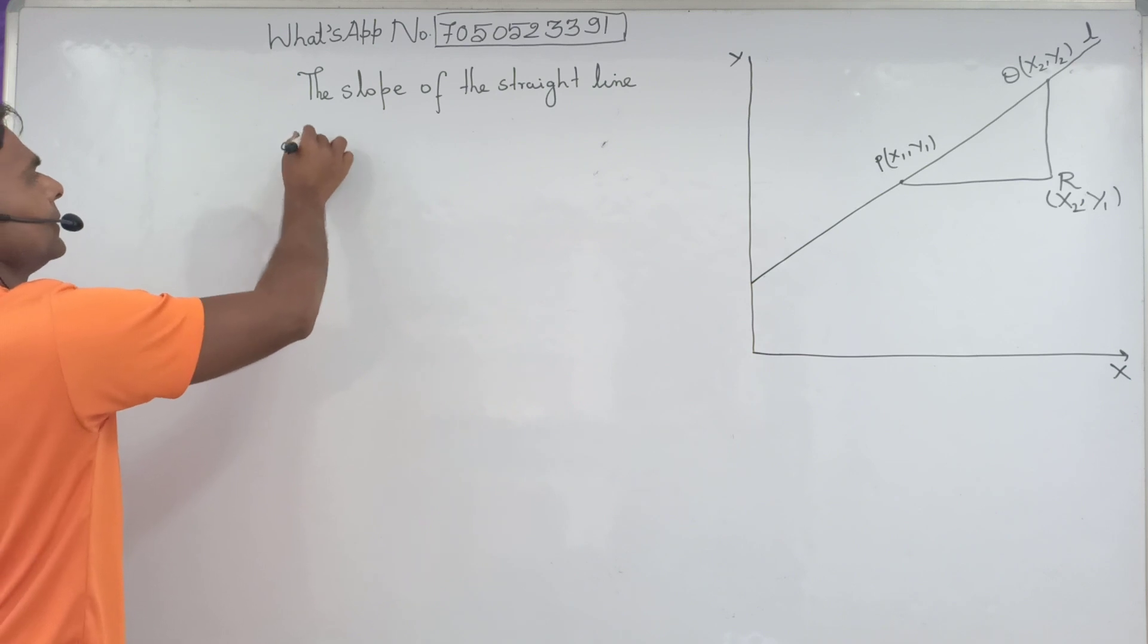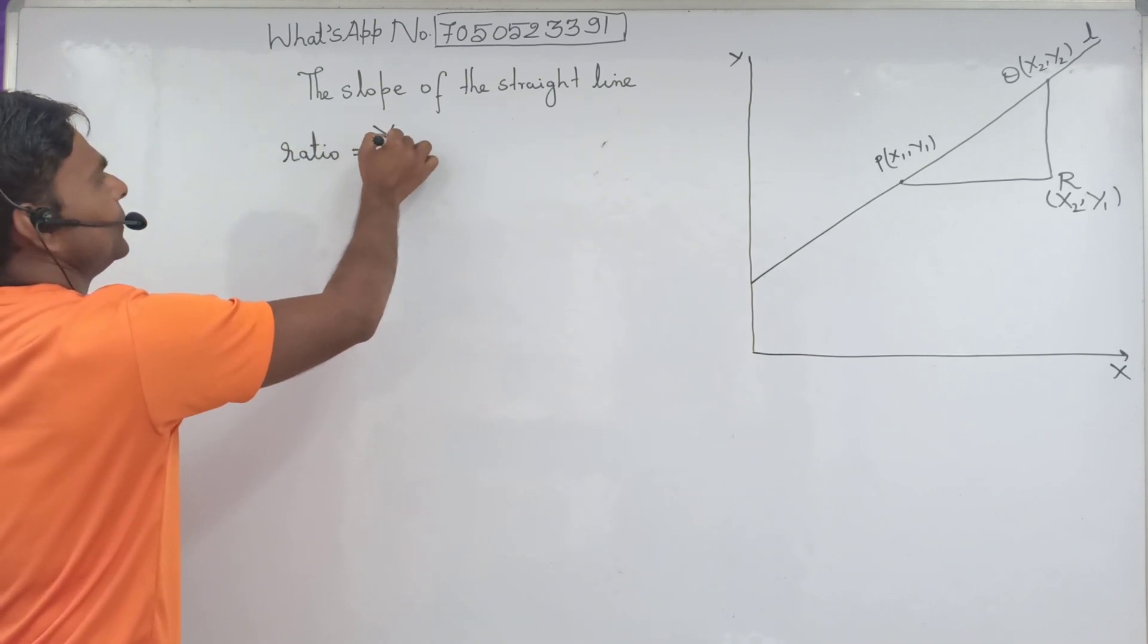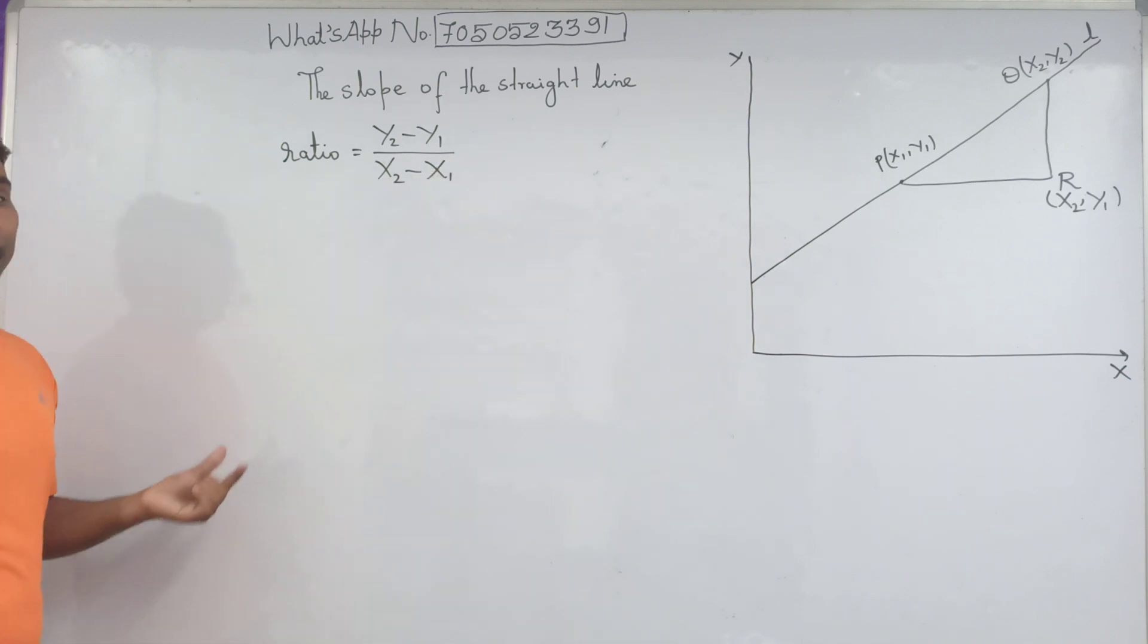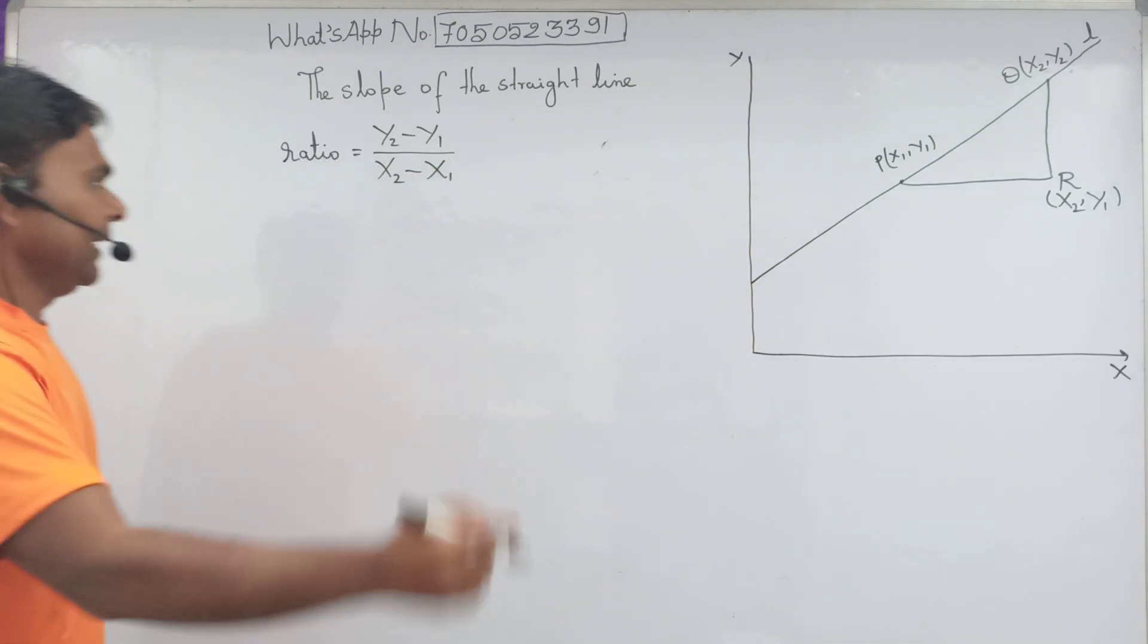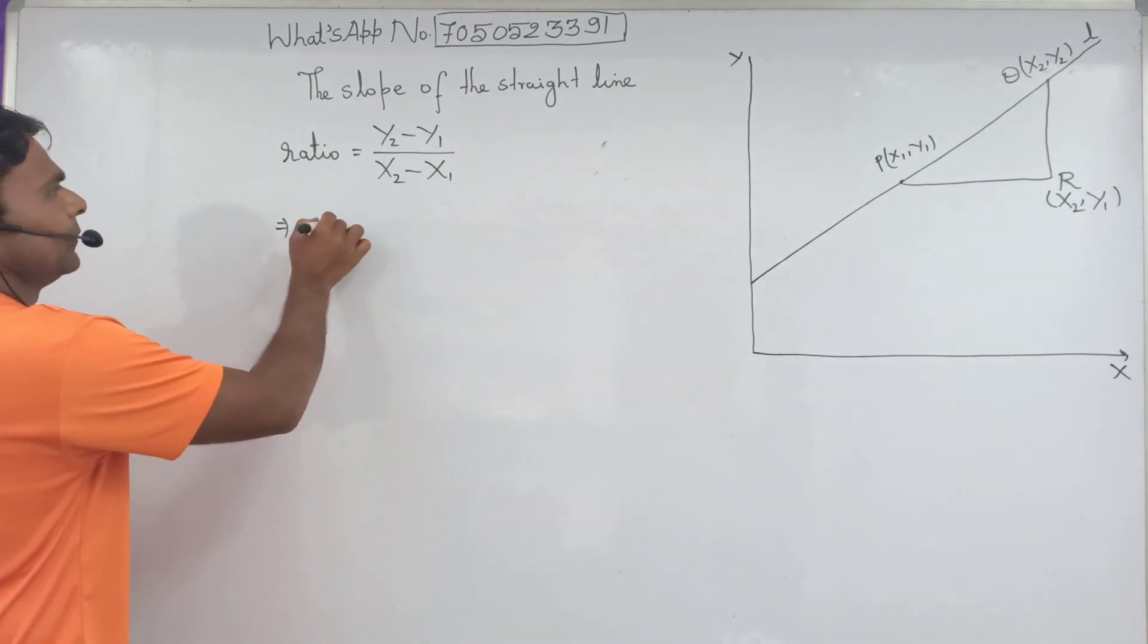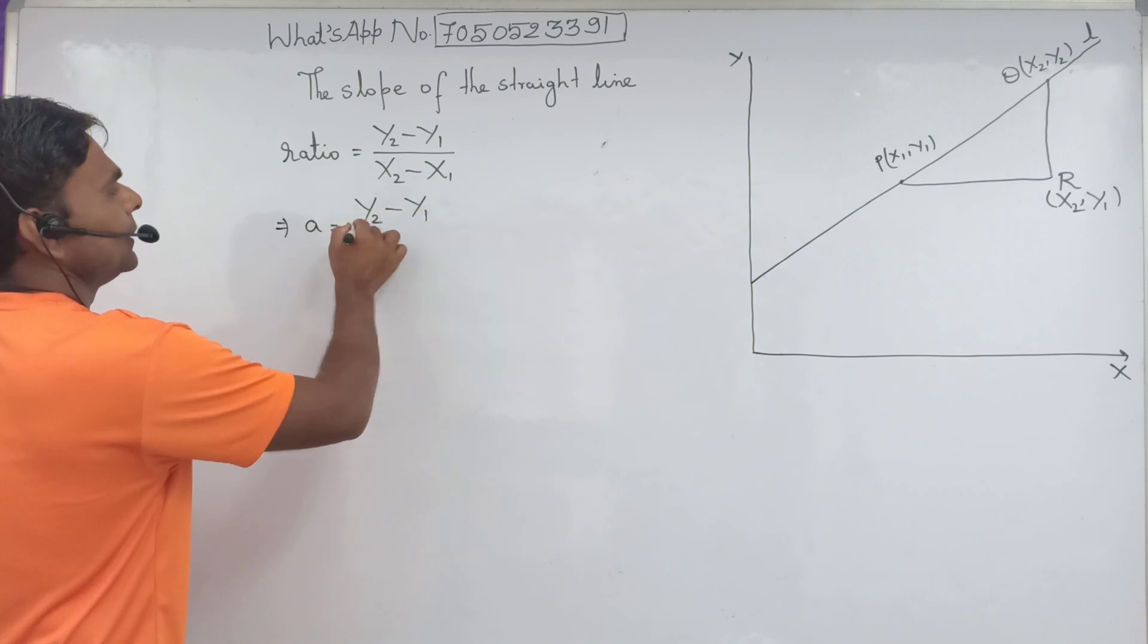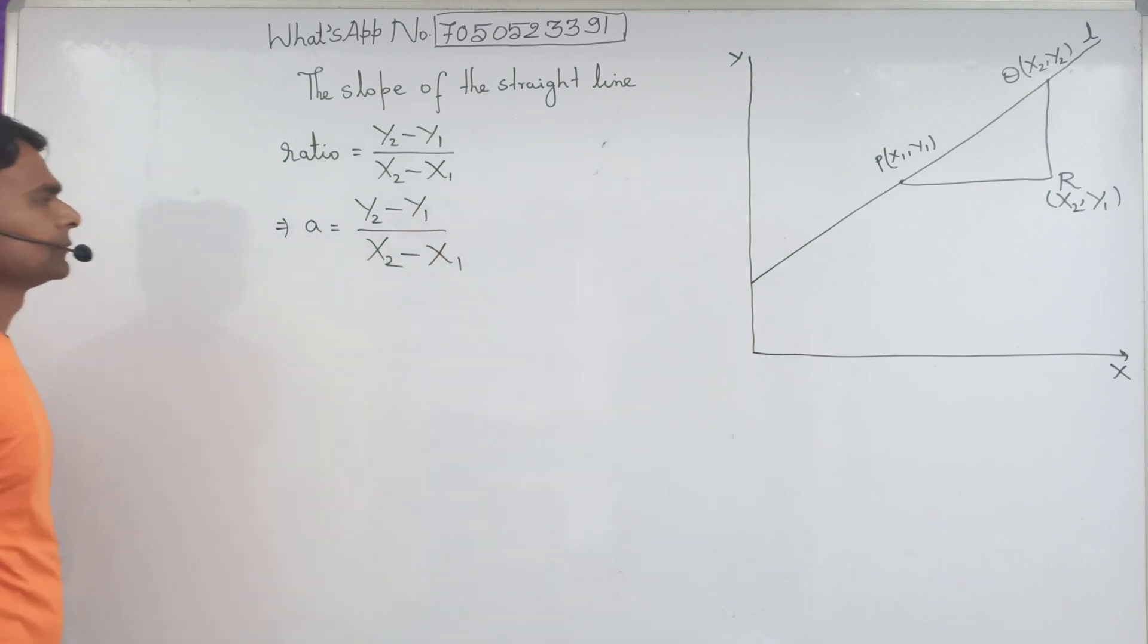Because line is non-vertical, the slope of line is the ratio, equal to y2 minus y1 over x2 minus x1. If we denote slope by A, it can be written A equal to y2 minus y1 over x2 minus x1. This is the slope of a straight line.